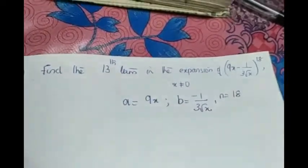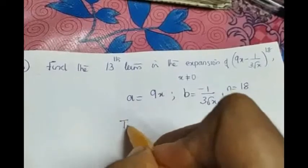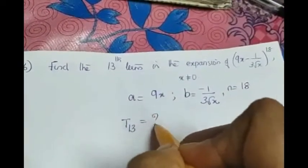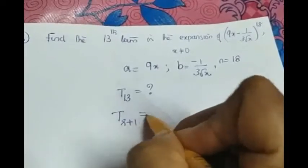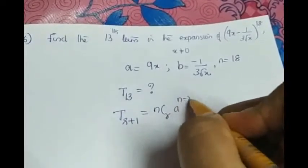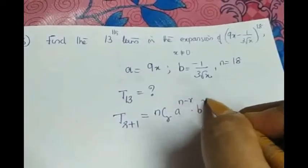What we have to find? The 13th term, that is T_13. We have to find the 13th term. So we will write the general term T_{r+1} equals what is the formula? nCr · a^(n-r) · b^r.